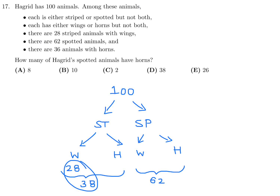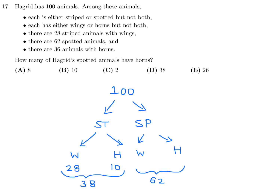Of the 38 striped animals, 28 already have wings, so 38 minus 28 equals 10 are striped with horns. There are 36 animals with horns total, and 10 are striped with horns, so the other 26 must be spotted with horns. The question asks for spotted animals with horns, which is 26. Number 17, the answer is E.